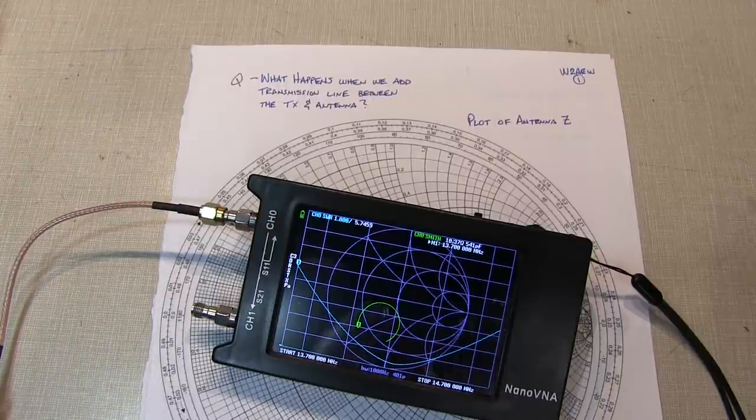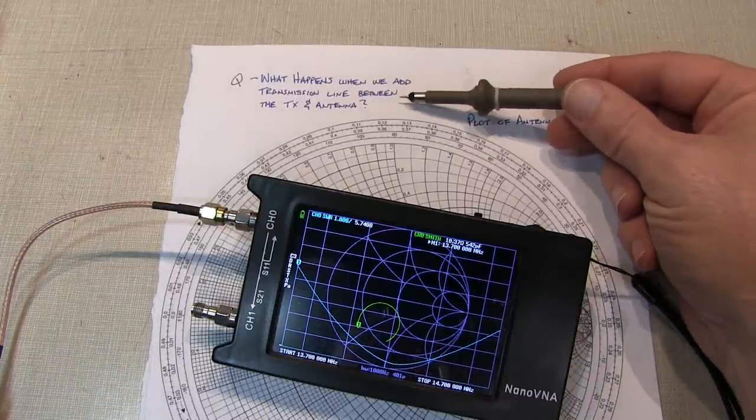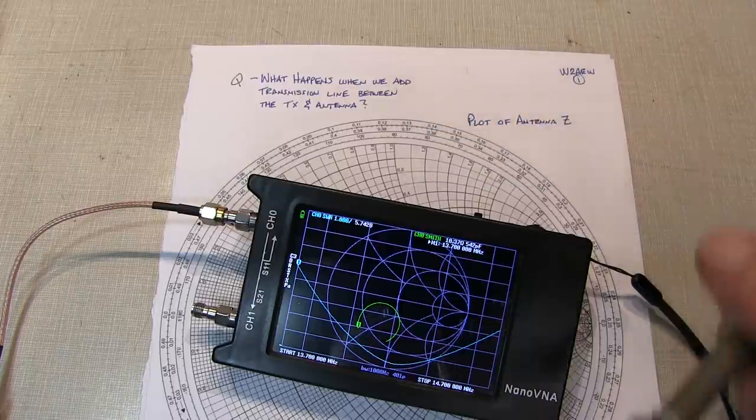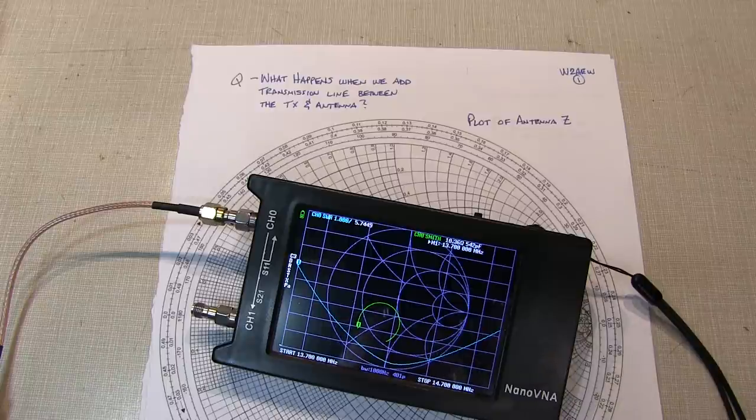In this video, we're going to take a look at what happens when we add transmission line between a transmitter and an antenna. I'll give you the answer very quickly, and then we'll actually go look at why, and actually go make some measurements and show it.